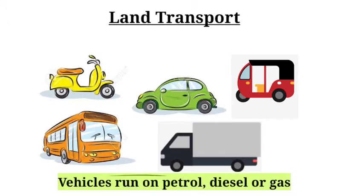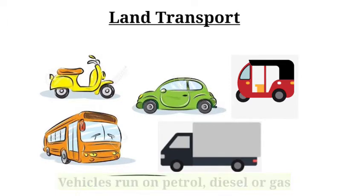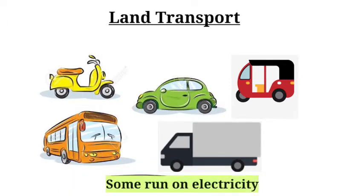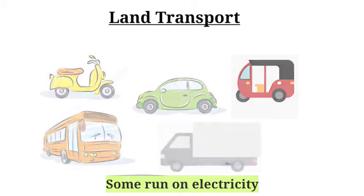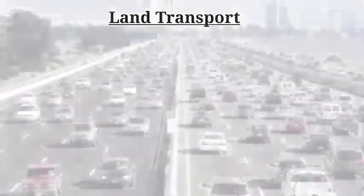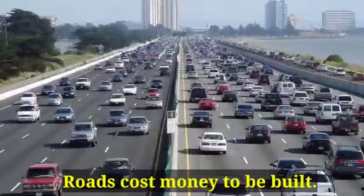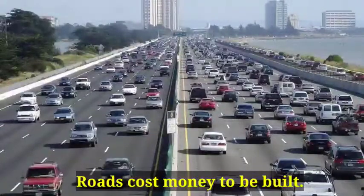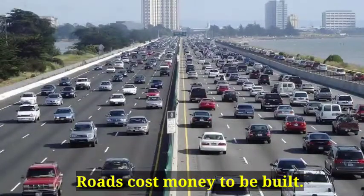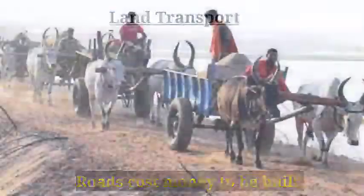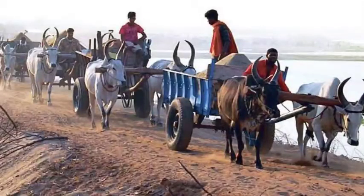Buses, cars, trucks, scooters, and auto rickshaws are some examples of motor vehicles. Most of them run on petrol, diesel, or gas; some run on electricity. Motor vehicles need roads and also cost a lot of money.